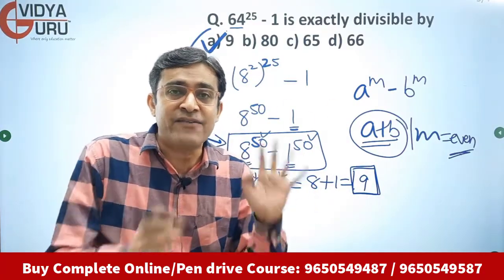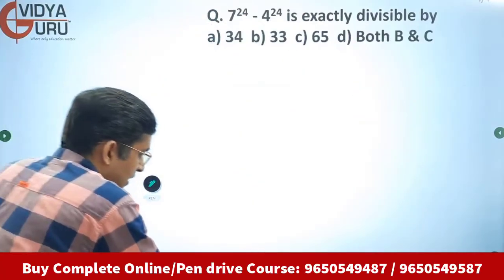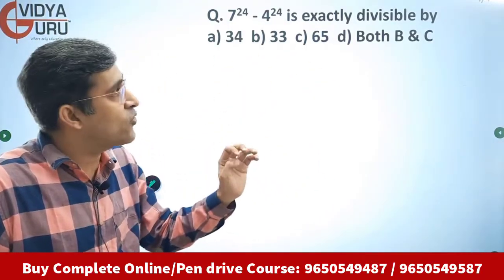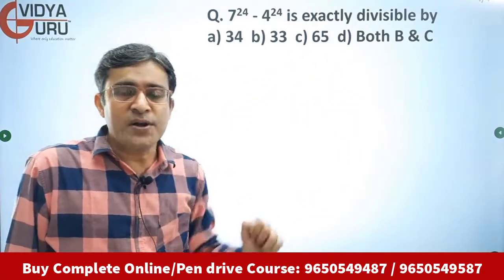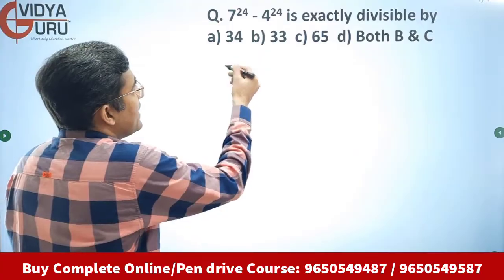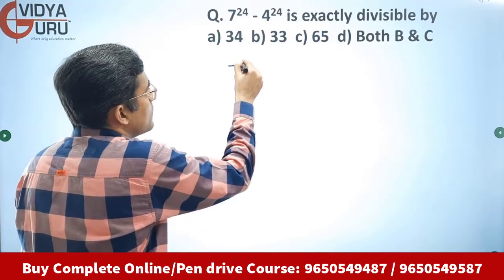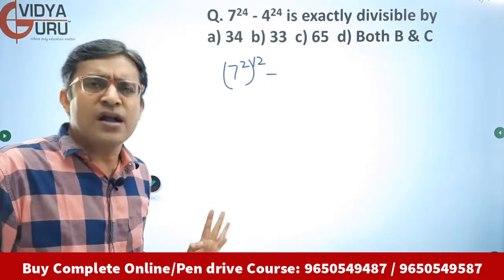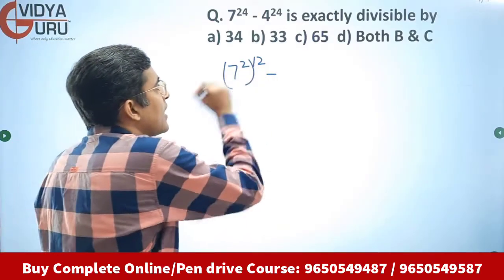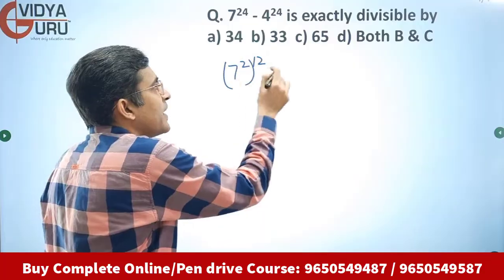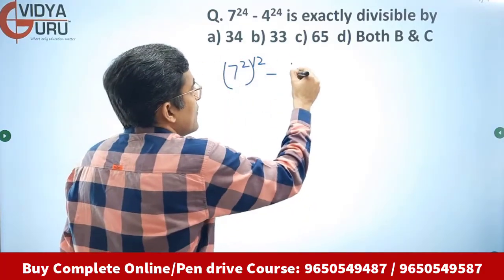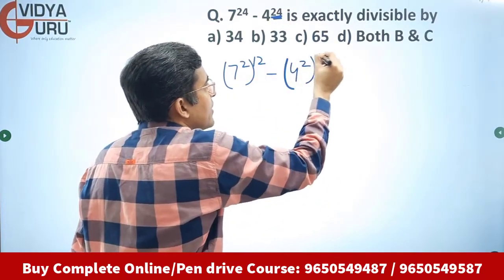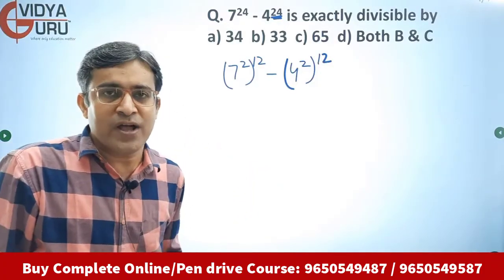Now let's raise the difficulty level and look at the last question: 7 raised to power 24 minus 4 raised to power 24 is exactly divisible by which of the following? I can write 7 raised to power 24 as 7 squared raised to power 12, since 12 twos are 24. Inside I have 7 squared and the power outside is 12. Similarly for the next number, I reduce 4 raised to power 24 to 4 squared raised to power 12.